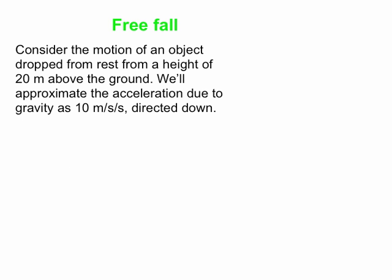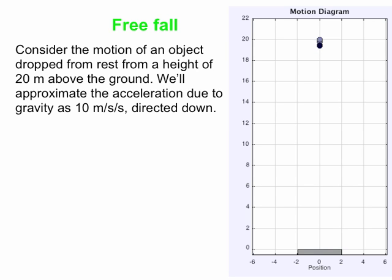Those statements were generally true, but we're going to now look at a particular example of free fall — this is constant acceleration. We're going to approximate that the acceleration due to gravity is 10 meters per second every second directed down. Really it's 9.8 on Earth, but 10 is close enough. We're going to drop our object from a height of 20 meters above the ground, and when we let it go, it falls and accelerates down toward the ground.